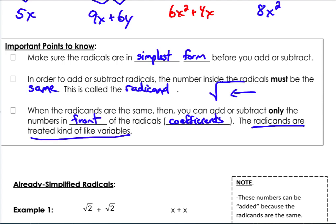When the radicands are the same, then you can add or subtract only the numbers in front of the radicals. Remember, we call those coefficients. The radicands are treated kind of like variables.